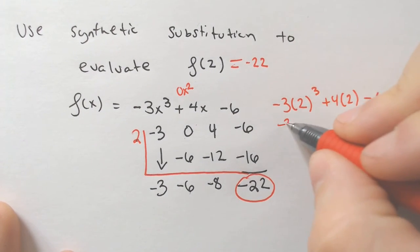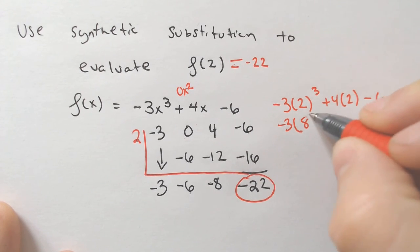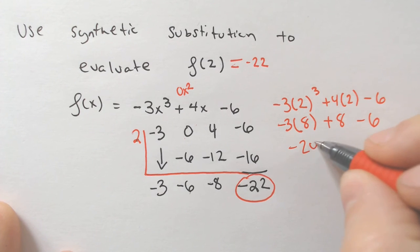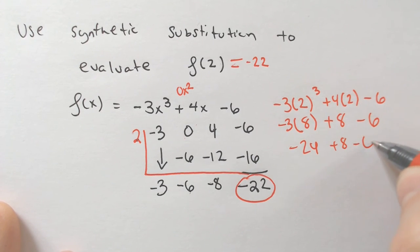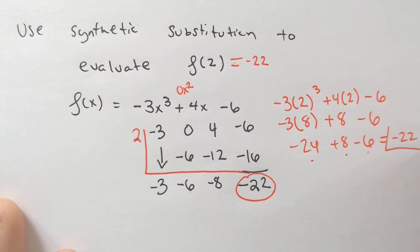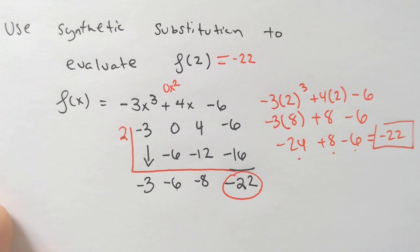But if you did, you would end up with negative 3 times 2 to the 3rd, which is 8, plus 4 times 2, which is 8, minus 6. And then you could get negative 24 plus 8 minus 6. And I'm kind of drawing my voice out here, because this is normally a lot more annoying to do. In this case, it's about 50-50. Negative 24 plus 8 minus 6 also equals negative 22. You get the same answer either way.